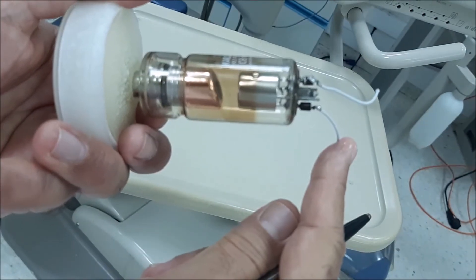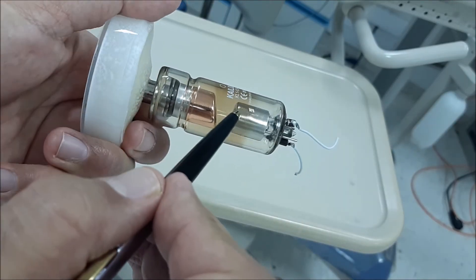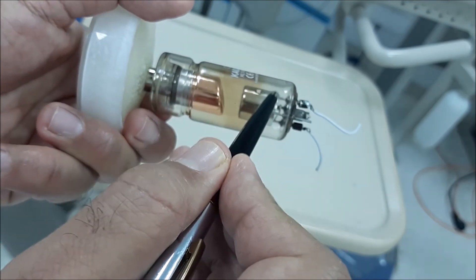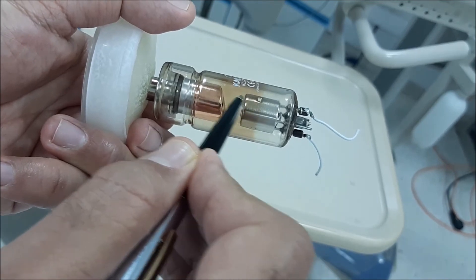So we have a step-down transformer that is going to heat up the tungsten filament, and we have a step-up transformer that will create a potential difference between the negative cathode and the positive anode, so that electrons will travel